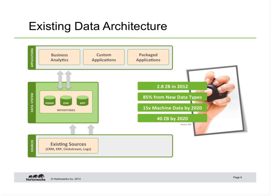Let's talk about data architecture. This is a very simplified view of the existing data architecture that almost all organizations have today. They take existing sources from a variety of structured and semi-structured sources, put them into relational processing engines — RDBMSs, CDWs, other kinds of MPP scale-out architectures — and then interact with that data through a series of applications, whether bespoke custom-built or off-the-shelf applications for business intelligence, operational processing, and analytics.